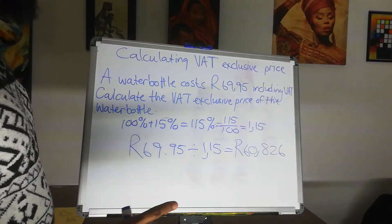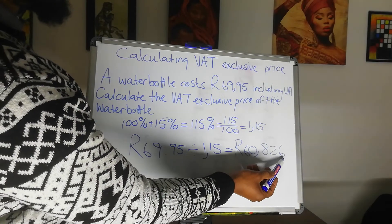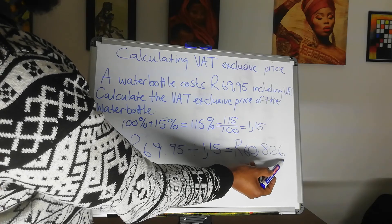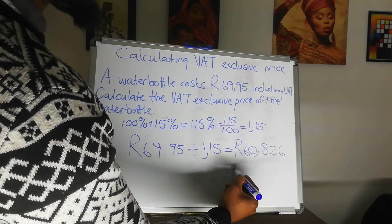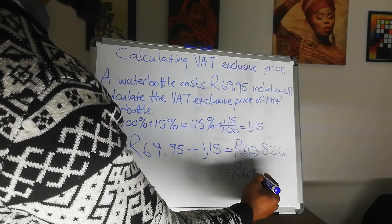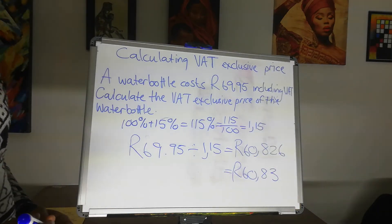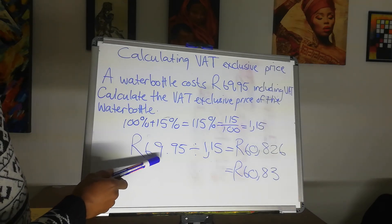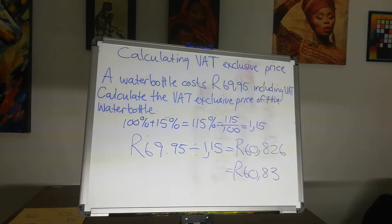However, our final answer must be to 2 decimal places. So we look at the third decimal. The third decimal is more than 5, so the rule of rounding dictates that the second decimal must get a plus 1. So the final answer is 60 rand and 83 cents. And that is how you calculate the VAT exclusive price. We can see here we have 69 rand and here we have 60 rand, meaning we took out the VAT, causing the price to decrease.